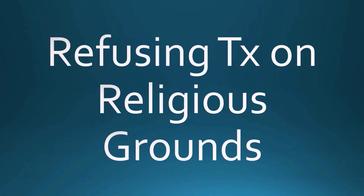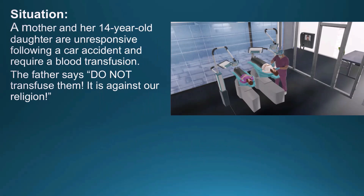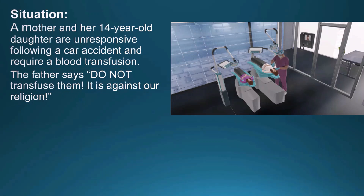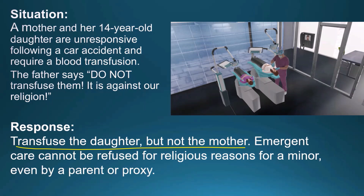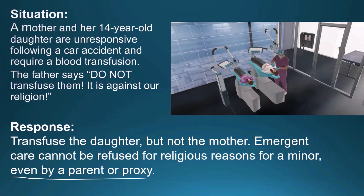Refusing treatment on religious grounds. A mother and her 14-year-old daughter are unresponsive following a car accident and require a blood transfusion. The father says do not transfuse them — it is against our religion. Do we transfuse the mother and her daughter? Transfuse the daughter, but not the mother. Emergency care cannot be refused for religious reasons for a minor, even by a parent or proxy. So we give the transfusion to the daughter, but not the mother.